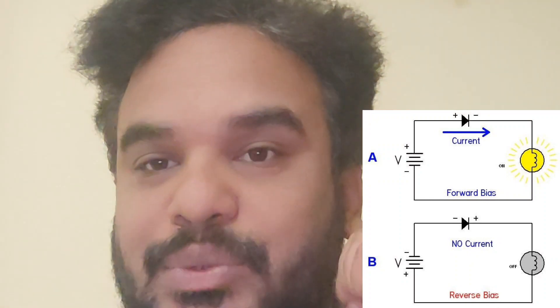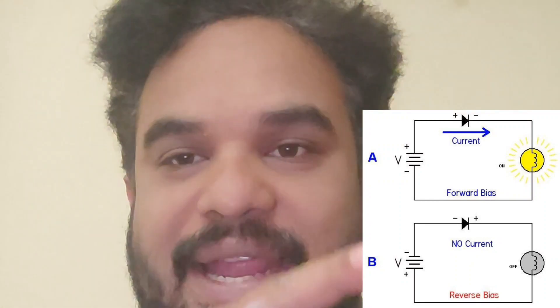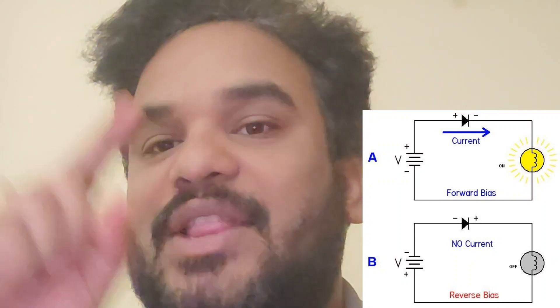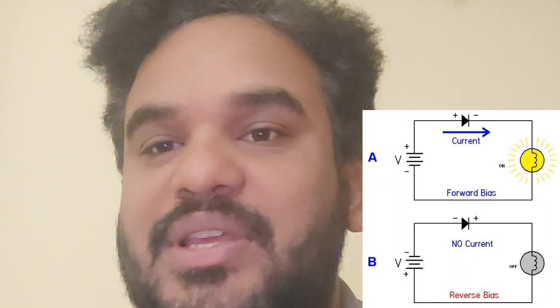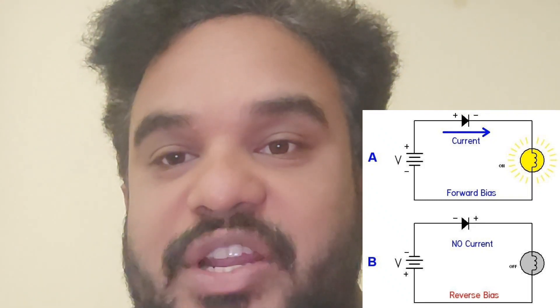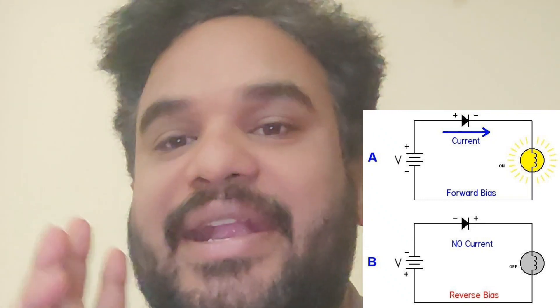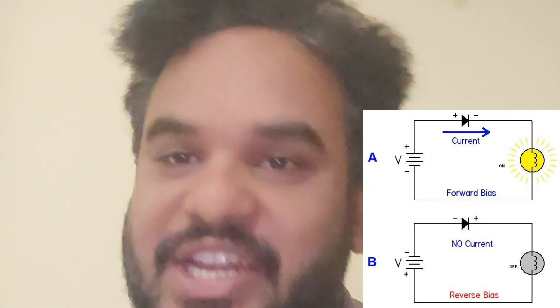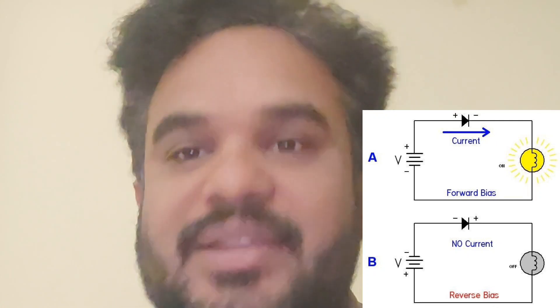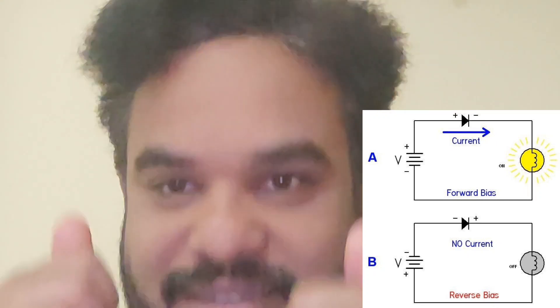In diagram 2, anode is connected to the negative and cathode is connected to the positive, so it is reverse biased — means open circuit, and the light will not turn on. So that concludes forward biased and reverse biased. Thank you.